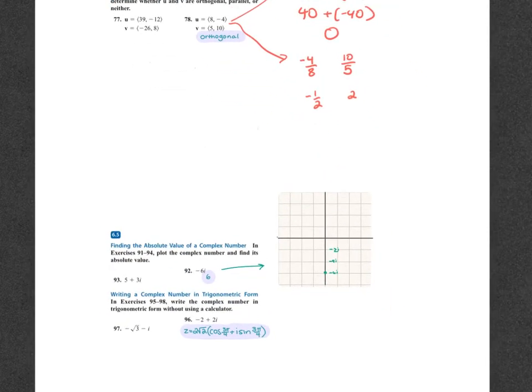I can't stress it enough that you need to pay attention to directions. If it says to round an answer, you're going to round it using your calculator. If it does not say to round, you're going to keep it exact. These numbers with square roots are going to be kept exact. The only ones you round are Law of Sines, Law of Cosines, their areas, and the angle between.